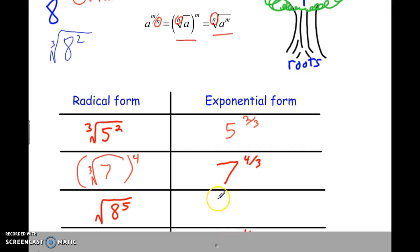And this one, be careful here. So it would be 8 to the what fraction. What's the root here? The root is understood to really be 2 there. So therefore, this would have to be a 2 here. And then the 5 is an exponent. So 8 to the 5 halves is the same thing as the square root of 8 to the 5th.